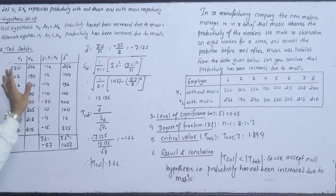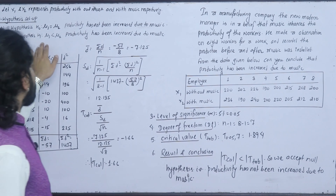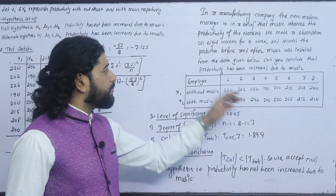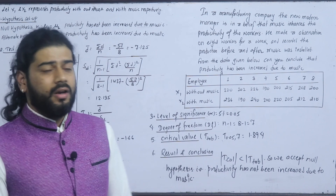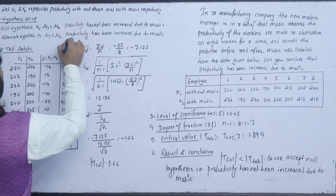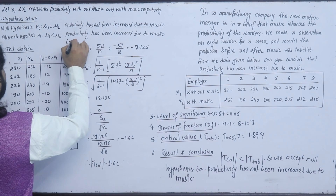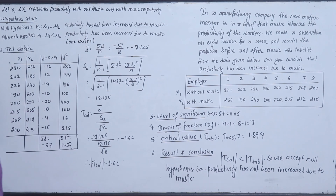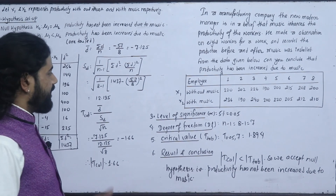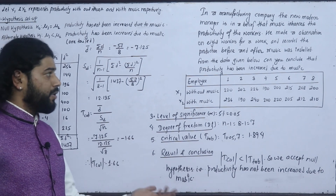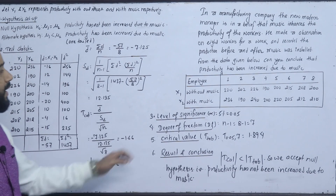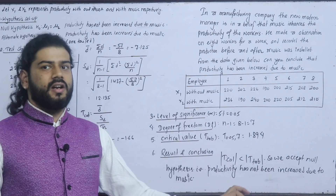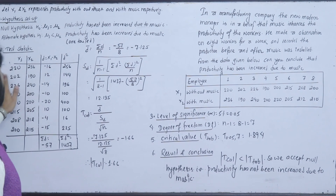Alternate hypothesis: productivity has been increased due to music, that is μ1 < μ2. Now we compute the test statistic. x1 and x2 have a difference. The difference means d = x1 - x2 and we calculate the standard deviation.